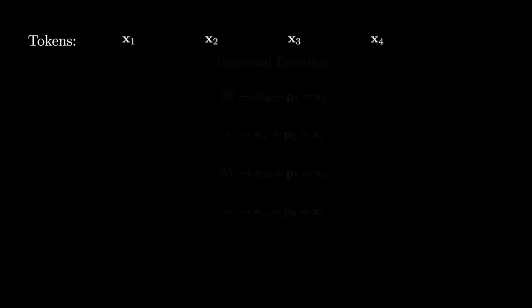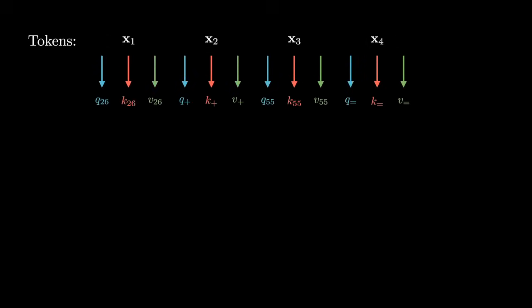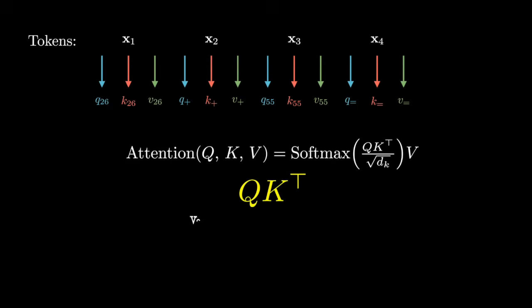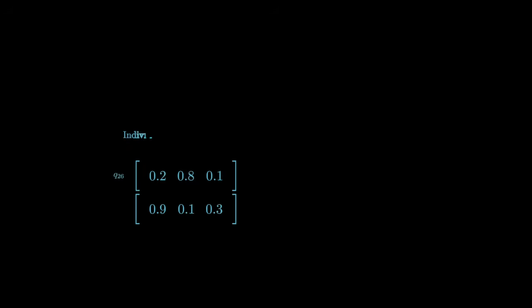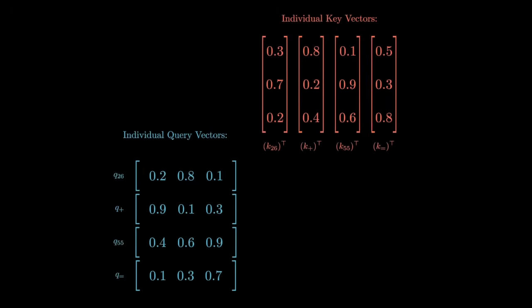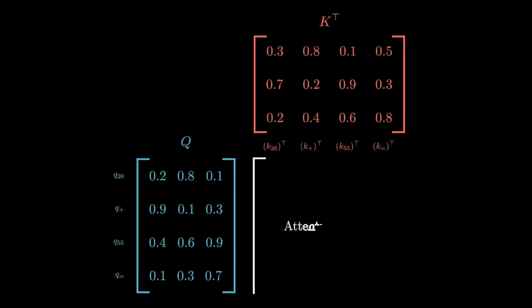Positional encodings are first added to the original embeddings so the model knows where each token sits. Then the embeddings are passed through three learned projection matrices to create a query vector, a key vector, and a value vector for every token. Let's first focus on the dot product of Q and K transpose, because that's how we get the attention scores. Each query vector compares every key vector by a dot product to produce attention scores. Higher scores mean higher relevance, so the model pays more attention to those token pairs.